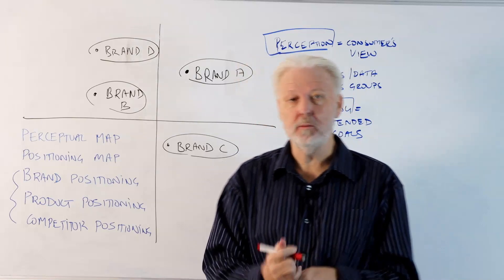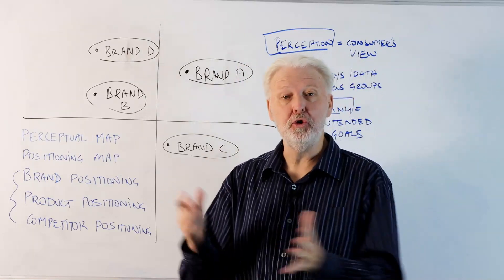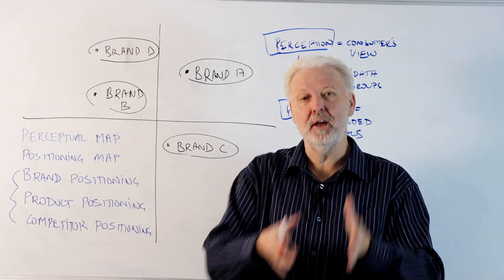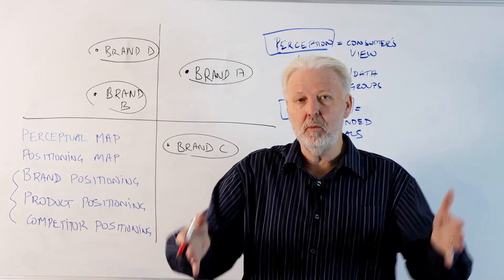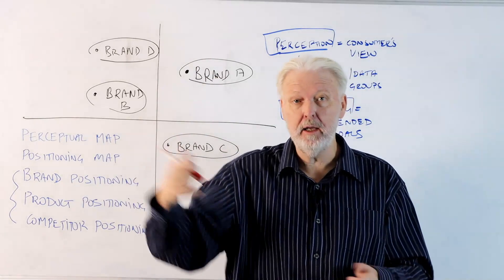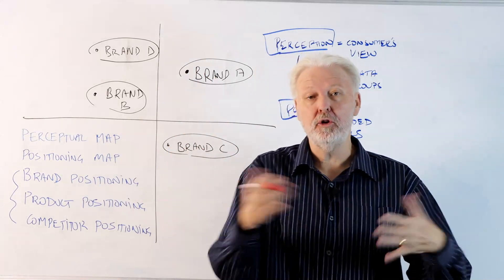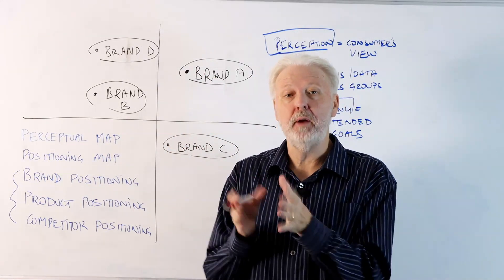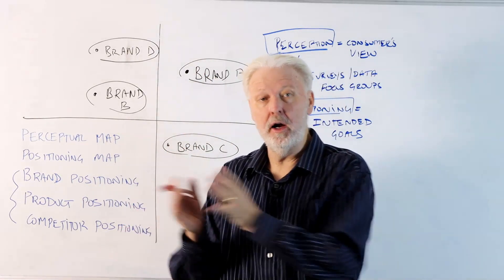For example, we may ask a consumer which bank do you think is the safest? We wouldn't ask it that way. We'd put it in a scale. On a scale of one to nine, how would you rank Bank A? Oh, they're a four. How would you rank Bank B? Oh, they're really safe, they're a nine.